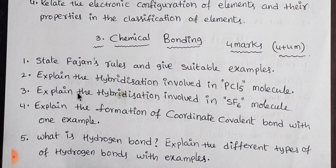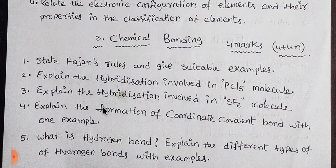Chemical bonding has a 4-mark weightage. We will give you 4 marks and 5 marks questions. Fajan's rules, hybridization involved in PCl5, SF6, and BF3, coordinate covalent bond, and hydrogen bonding are the important topics.